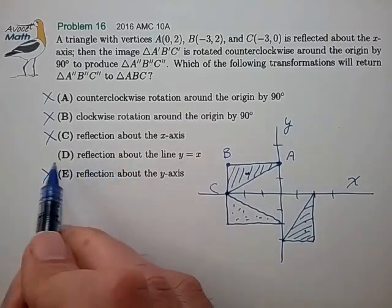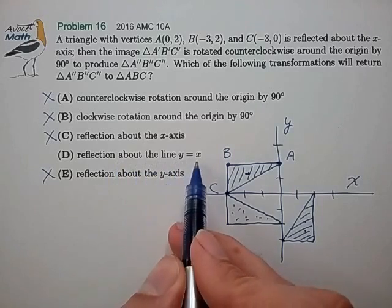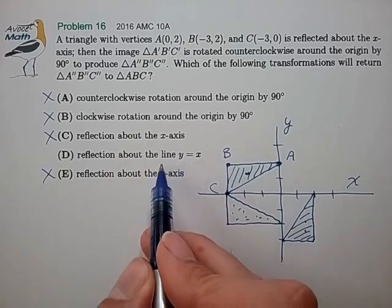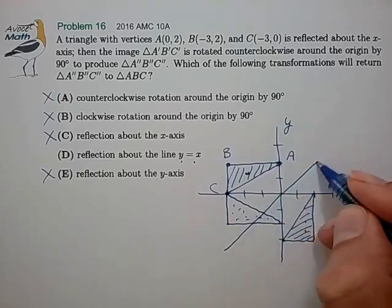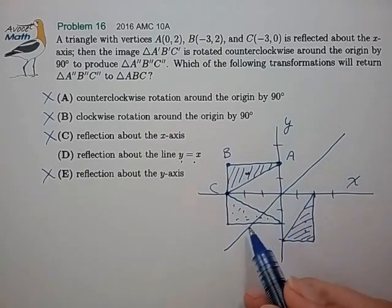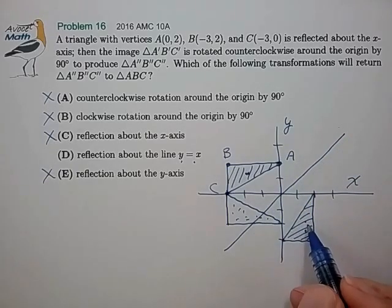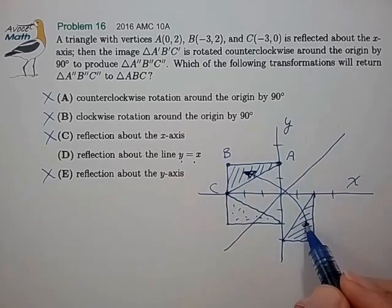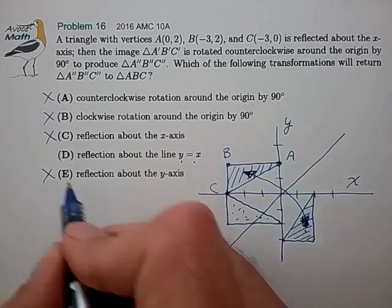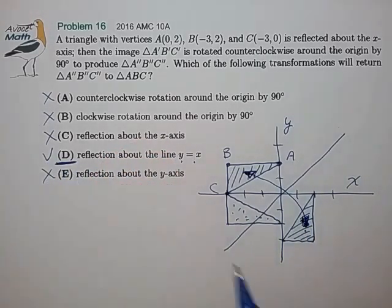So by process of elimination you probably see it's D. And you also notice well D actually does work. Because the line y equals x is this diagonal line. And that line will reflect this triangle back into this triangle. So that's the transformation that does work. And that is the correct answer. So it's choice D.